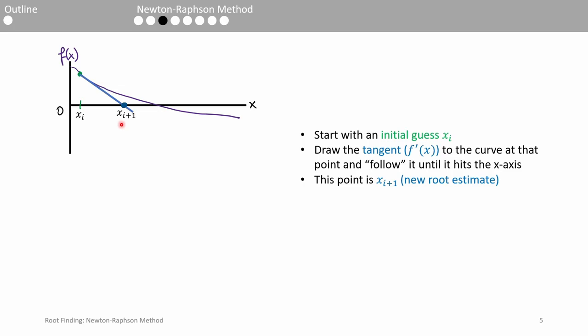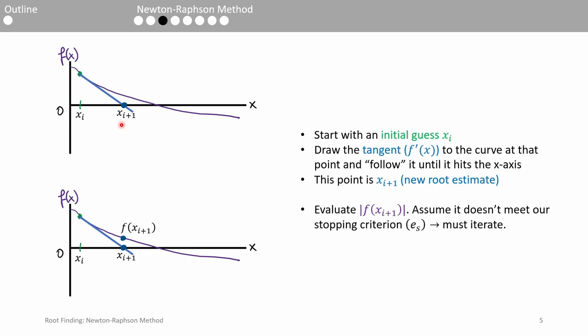This is where we assume the root is. Let's call this point x. We need to check if it's within our tolerance, which in this example is based on whether the absolute value of the function evaluated at the root estimate is sufficiently close to 0. We evaluate the absolute value of the function at this new point. For generality, I didn't put any numbers on the graph, but we can assume that f does not meet the stopping criterion, so we have to repeat this process.